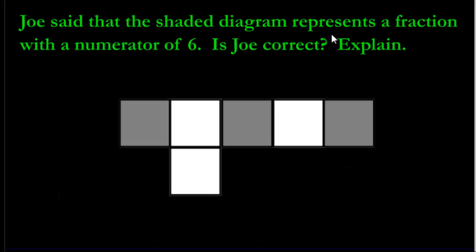Joe said that the shaded diagram represents a fraction with a numerator of six. Is Joe correct? Explain. Joe said that the shaded diagram represents a fraction with a numerator of six. Let's see. Numerator is how many you select. In this picture, we've chosen one, two, three. We've chosen one, two, three. The gray ones. So unfortunately, Joe is not correct. Numerator should be three. The denominator though is going to be one, two, three, four, five, six. The denominator was six. He got it all backwards.